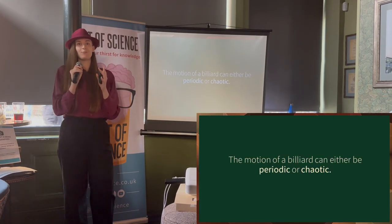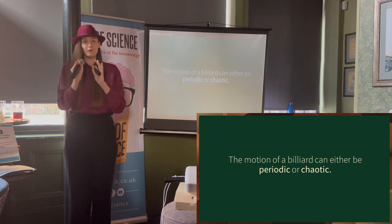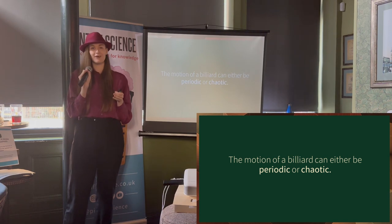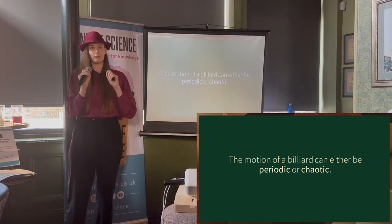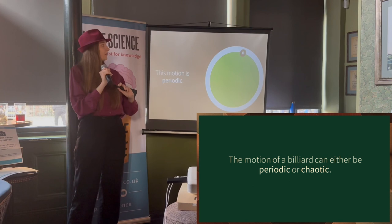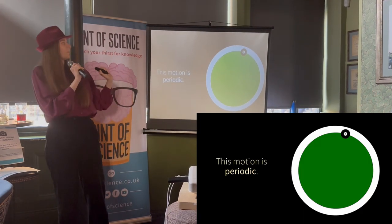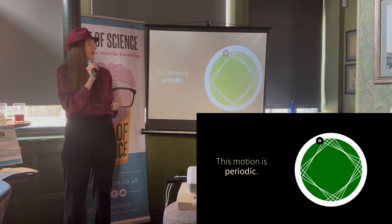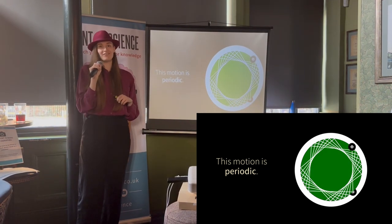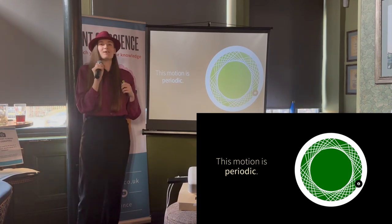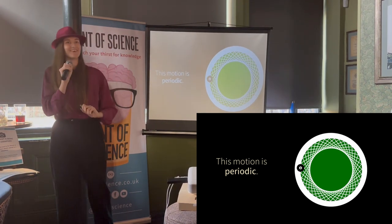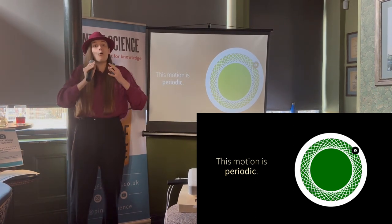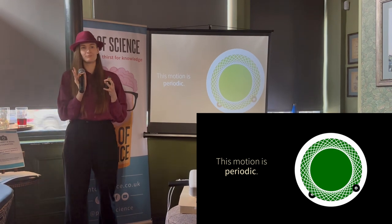Classical billiards is interesting because there's a couple of different types of motion a billiard can take. It can be periodic, the motion repeats, or it can be chaotic. It looks a bit messy. Periodic motion can look like this. If I let it just go for a while and let it keep bouncing around, and now it's repeating. So circles and ovals and ellipses all have periodic motion.